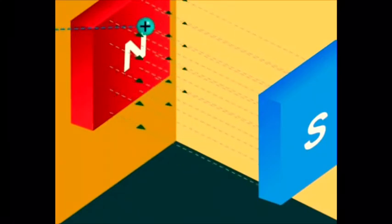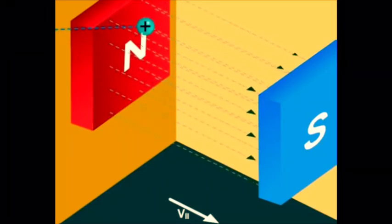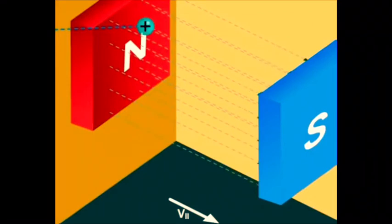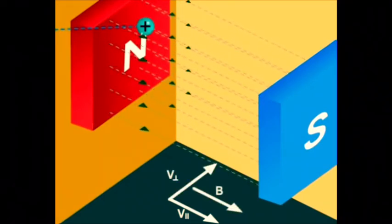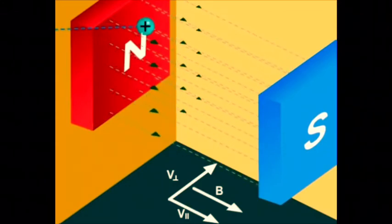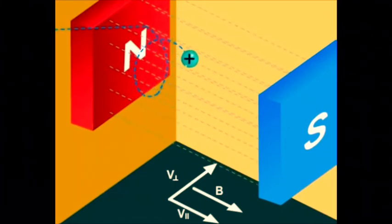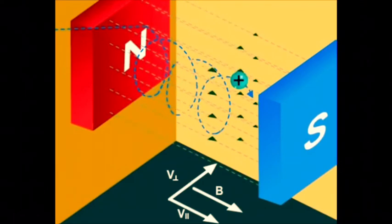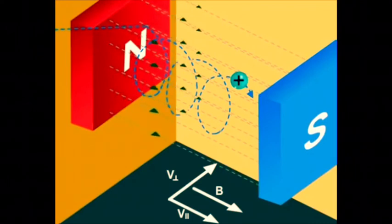Now let's consider the case where B and V are not perpendicular. We have two components of velocity: one parallel to B and another perpendicular to B. These cause linear motion and circular motion respectively, and the resulting movement will be spiral.